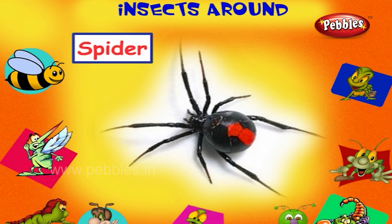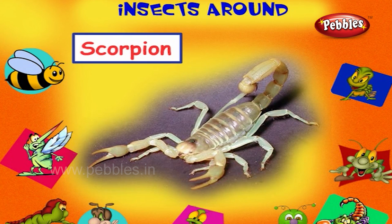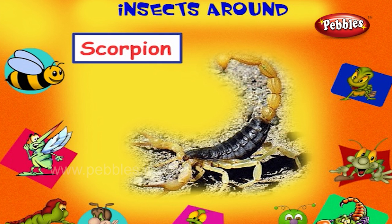This is a scorpion. It has two claws and a sting at the end of the tail. It has poison in it. So, be careful when you see the scorpion. Do not touch it.